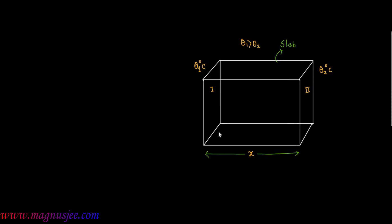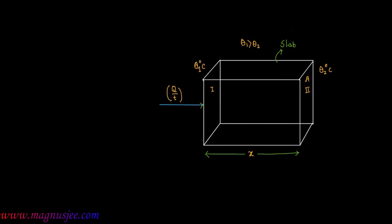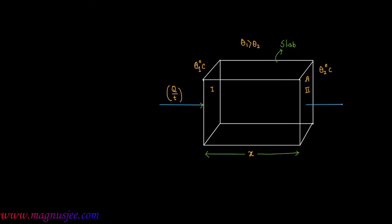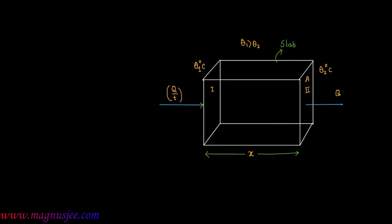The area of cross section of the slab is A. In this case, heat energy will be conducted from the left end to the right end — that is the direction along which heat energy will be conducted. The rate of conduction of heat is Q by T, where Q is the heat energy conducted through the slab in time T.